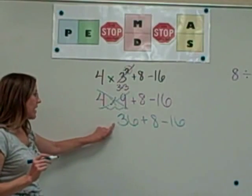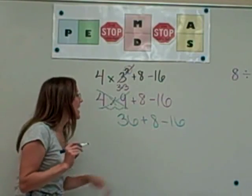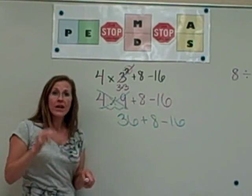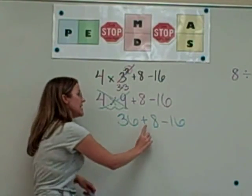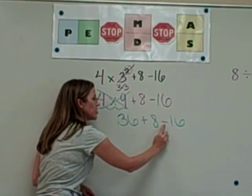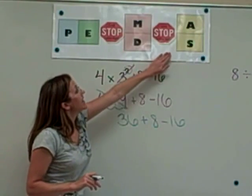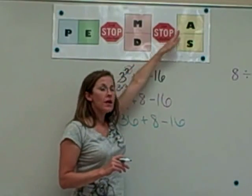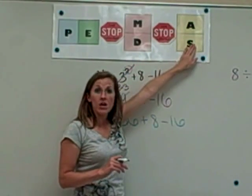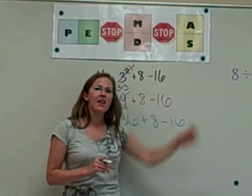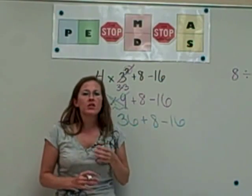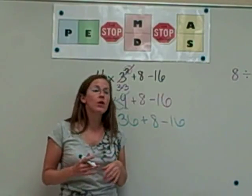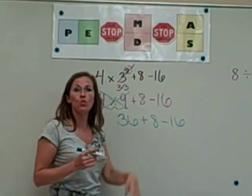We're going to then rewrite the problem. So looking at this now, we have 36 plus 8 subtracting 16. The operations that are in this problem is addition and subtraction. On here, you see that addition and subtraction are right on top of each other and they're listed as the same color. This is telling me that they are opposites from each other. They kind of have the same power. We're going to do them in order looking from left to right.